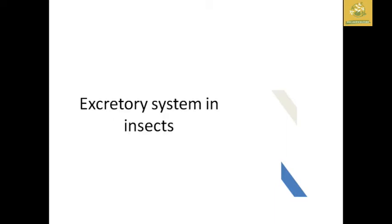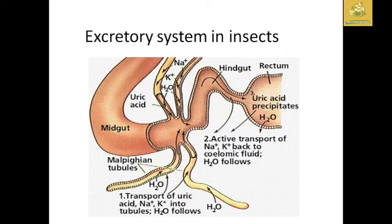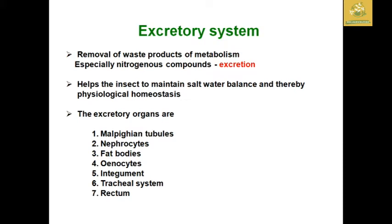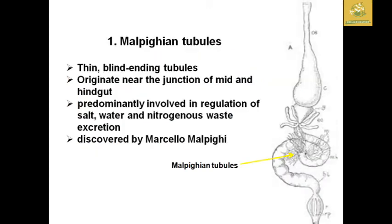In this video we are going to see the fundamentals of entomology — specifically the excretory system in insects. I have shown a picture of the excretory system of an insect so you can see the midgut, Malpighian tubules, hindgut, and rectum. The excretory system involves the removal of waste products of metabolism, especially nitrogenous compounds released from the body. It helps insects maintain salt-water balance as well as physiological homeostasis. The excretory organs present in insects are: Malpighian tubules, nephrocytes, fat bodies, oenocytes, integument, tracheal system, and rectum.